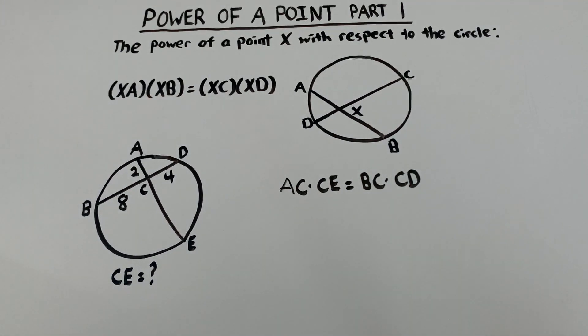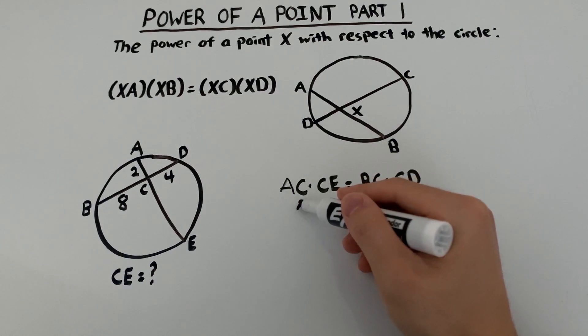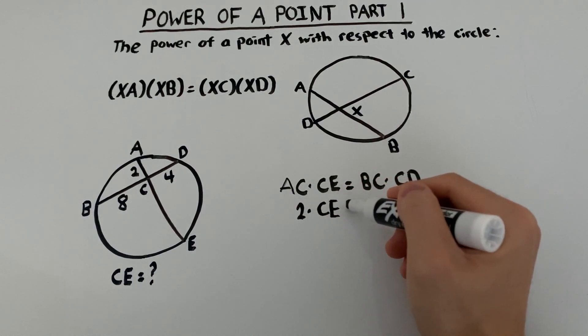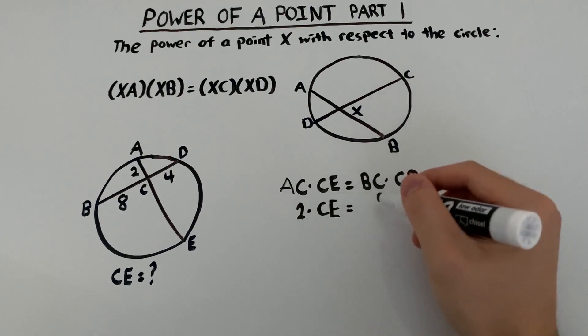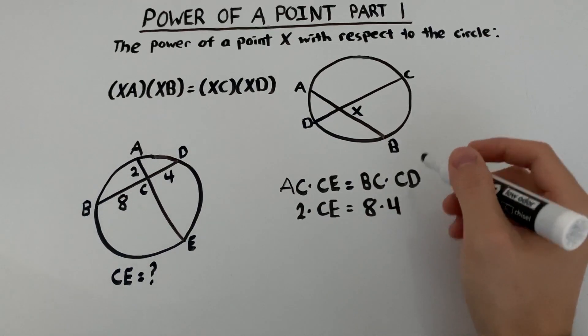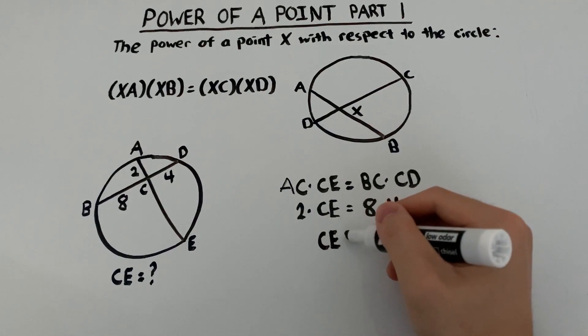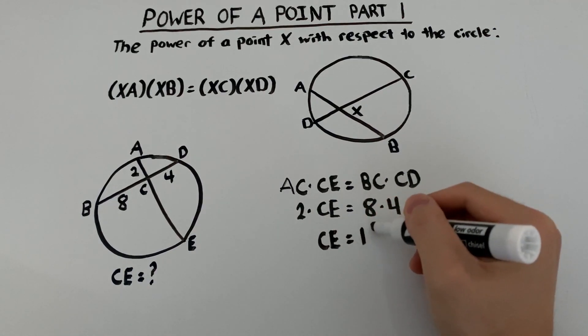So let's fill in everything we know. AC is 2, we're trying to find CE, BC is 8, and CD is 4. And then we'll find that CE equals 16.